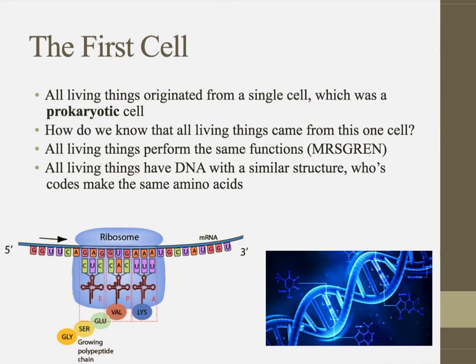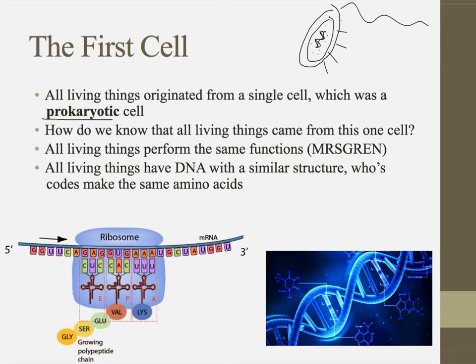We believe that first cell was a prokaryotic cell — a membrane surrounded by a cell wall, a nucleoid region with one circular chromosome, some ribosomes, maybe some pili, maybe a flagella. We know it was prokaryotic rather than eukaryotic because prokaryotes are simpler, and it's easier to believe a simple cell was the first cell. We'll talk about how eukaryotes came about in just a moment.